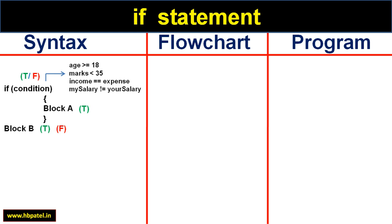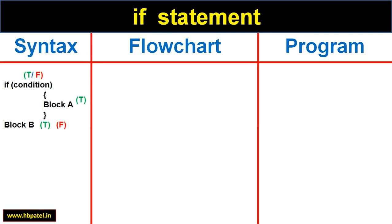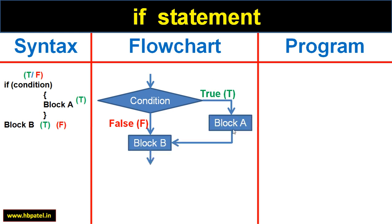Now let us try to understand the syntax using a flowchart. First let us represent a condition. We know that condition can result into either true or false. If the condition is true, then block A is executed first and then block B. If the condition is true, block A and then block B.